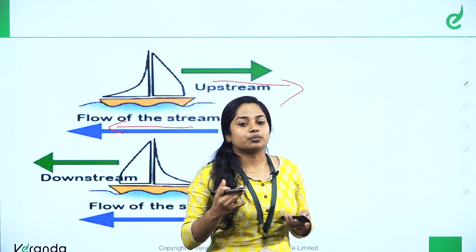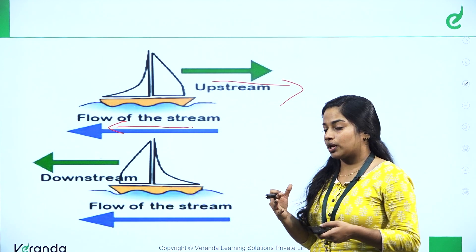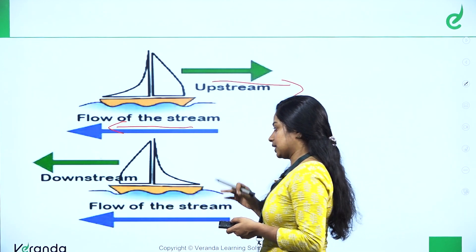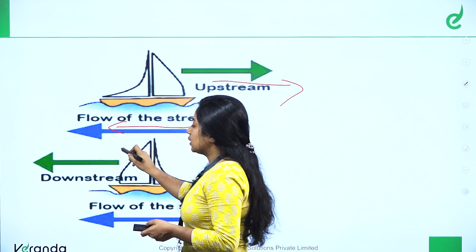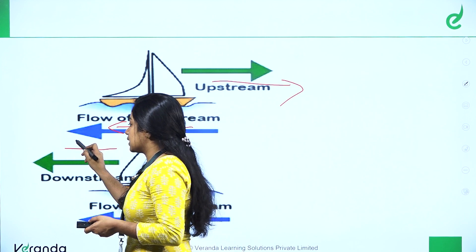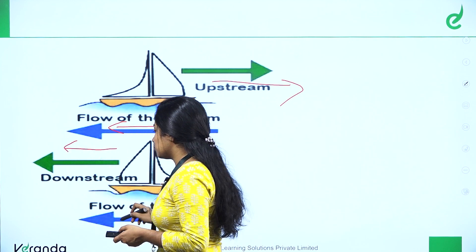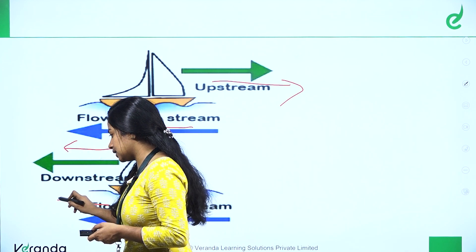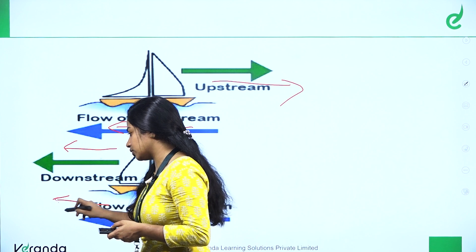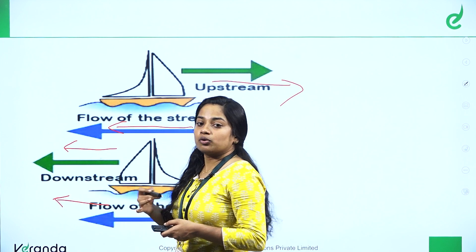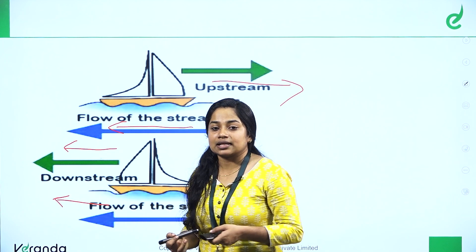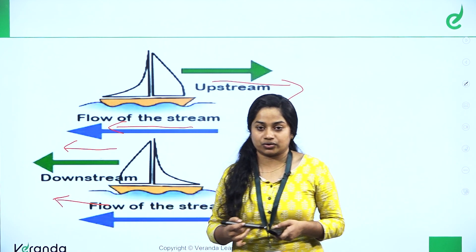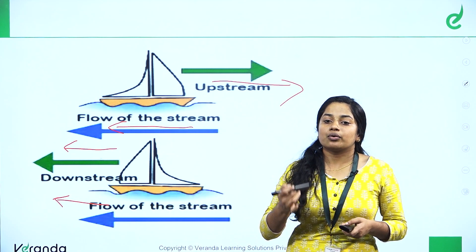When the boat and stream are in one direction — if you go where the boat is going and the stream is also going in the same direction — that is what we call downstream. What is downstream?